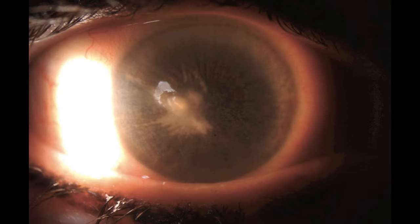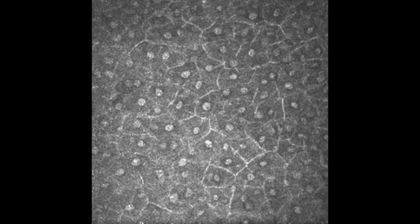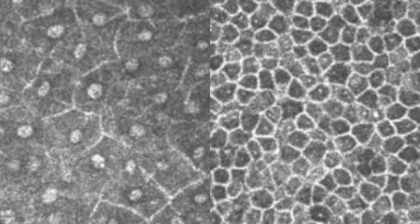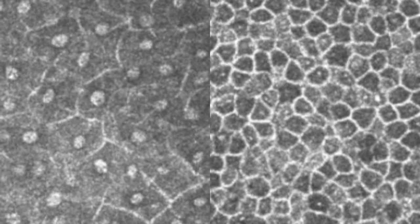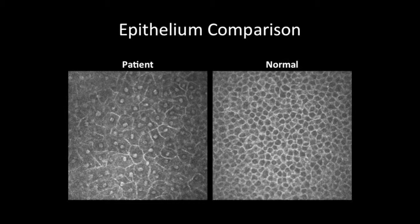Looking at confocal microscopy, we look at her epithelium and we see a distinct absence of white blood cells. Comparing her epithelium to the healthy one on the right, we see that her epithelium is both nucleated and larger, and so we concluded that the nuclei were the reason for the corneal clouding. We performed tarsorrhaphy and her cornea did clear up, saving her from another epithelial defect.